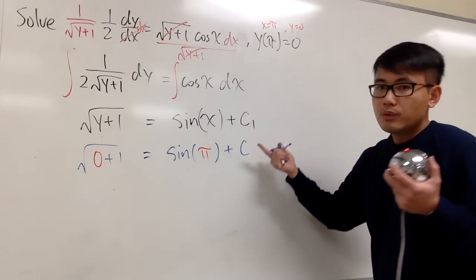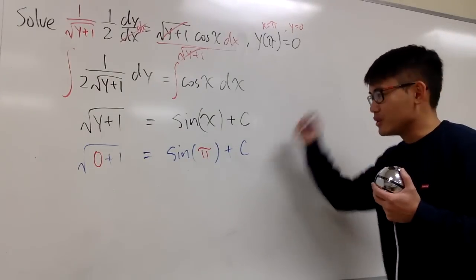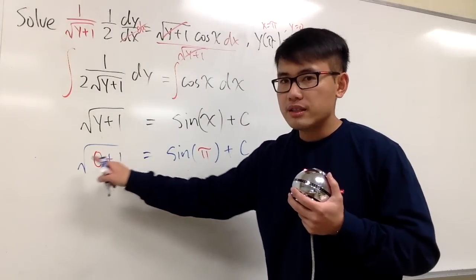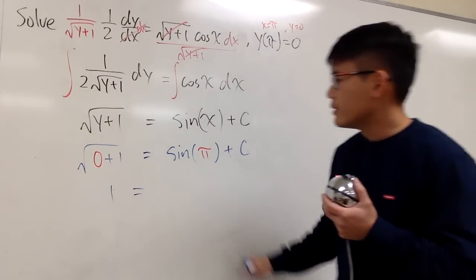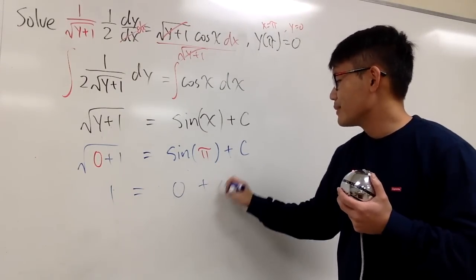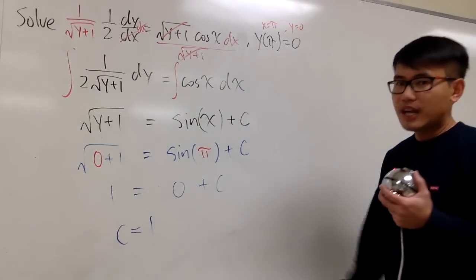Well, technically, we're just using the c right here, so you don't need to label it c1, just a c. Okay, 0 plus 1 is 1, square root of 1 is just 1. This is equal to sine of pi is 0, and then plus c. So, of course, you see, c is equal to 1. And you're pretty much done.